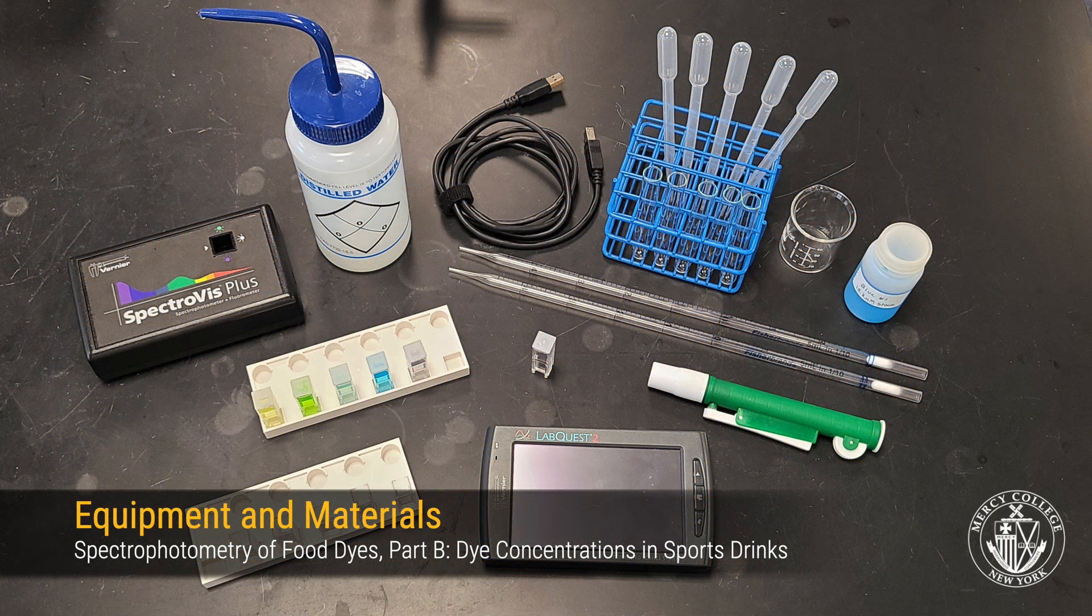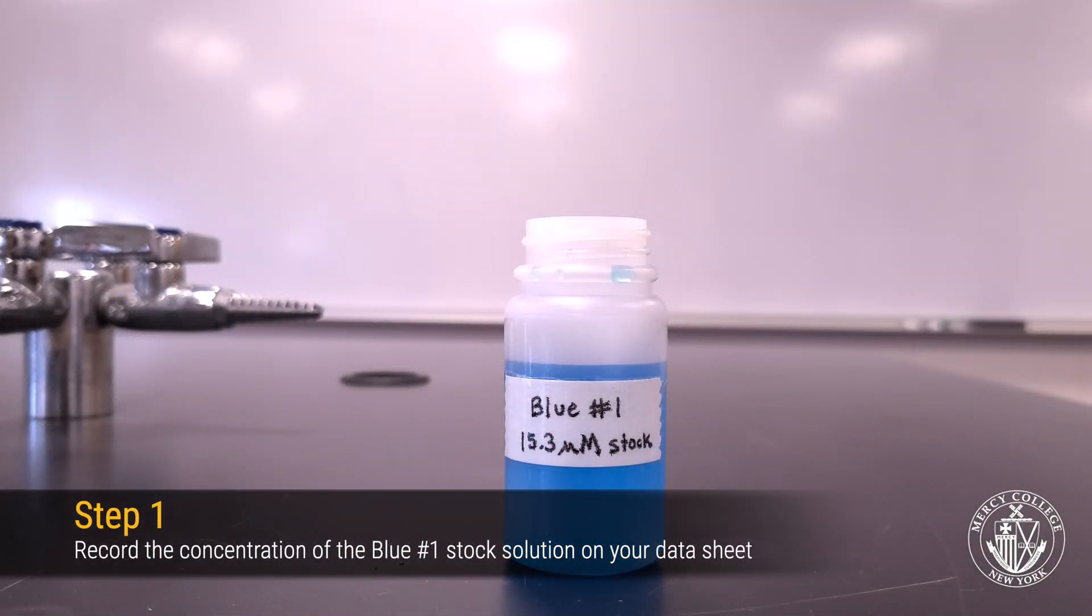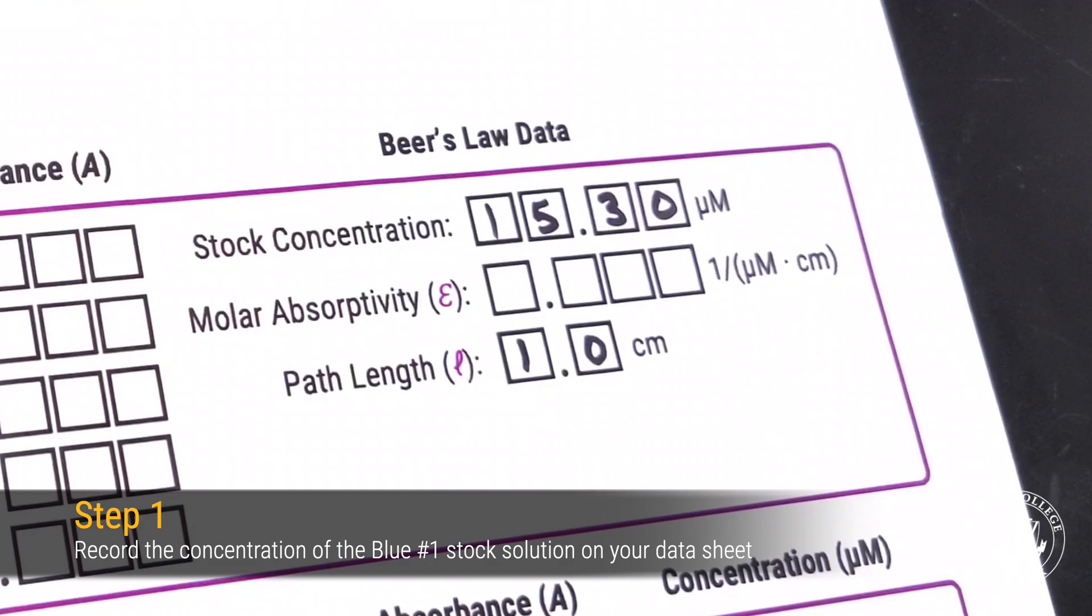Here are some of the materials that we'll make use of in Part B of this experiment. Begin by recording the concentration of your blue 1 stock solution on your datasheet.